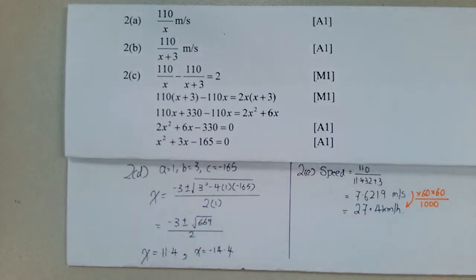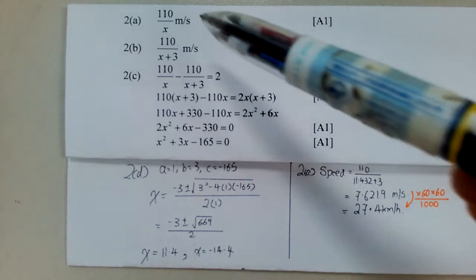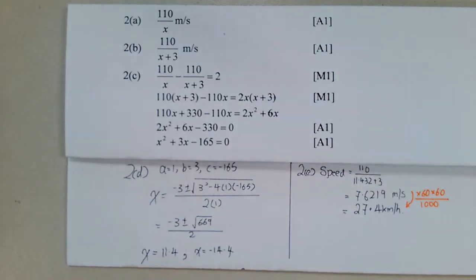We have 2a, speed. As we have learned in primary school, speed is distance divided by time. So 110 over x, simple enough.